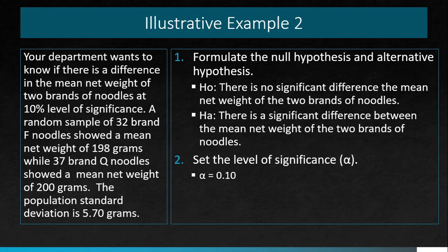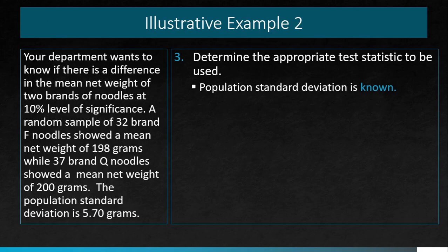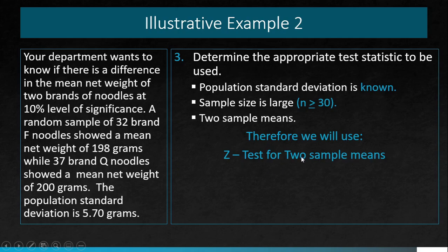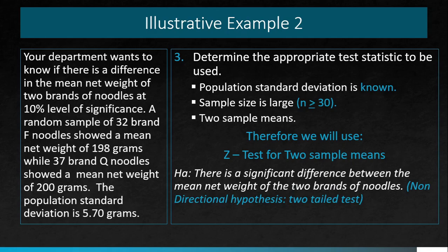Step 3: We use the Z-test because the population standard deviation is known — 5.70 grams — and the sample sizes are large: 32 and 37, both greater than 30. We have two sample means: 198 for Brand F and 200 for Brand Q. Therefore we use the Z-test for two sample means. The alternative hypothesis is non-directional, so we will use a two-tailed test.